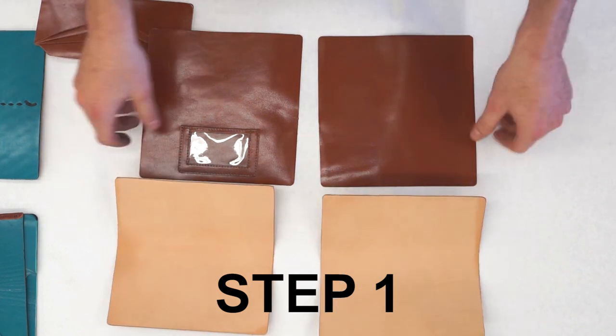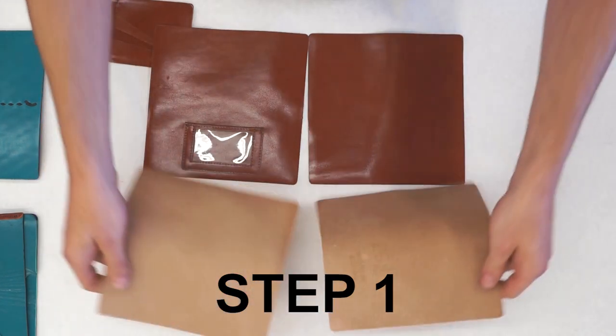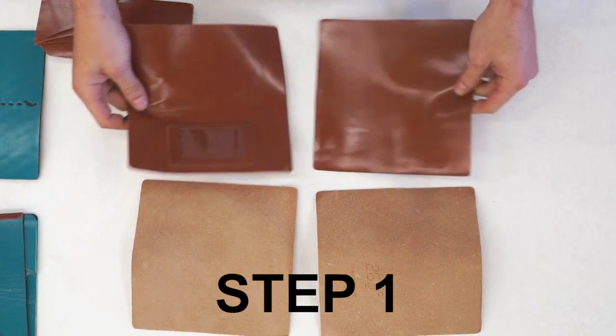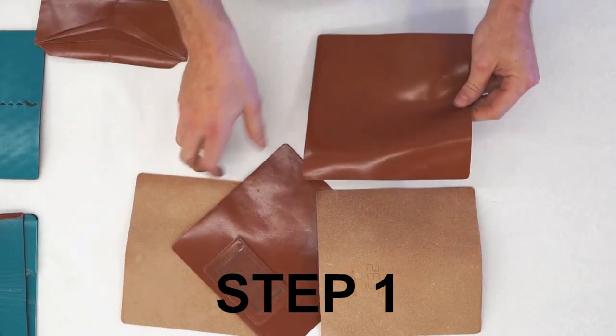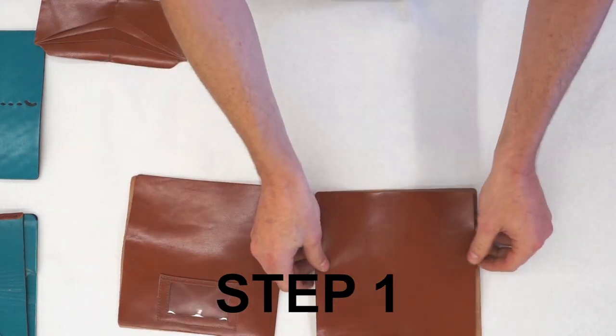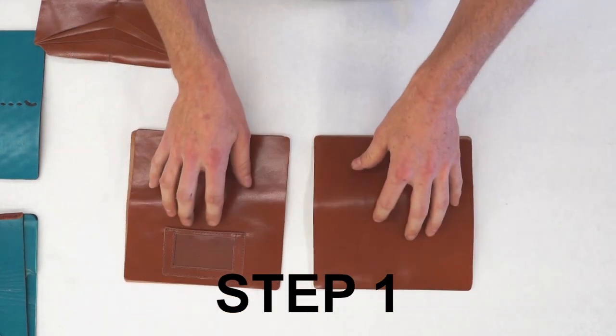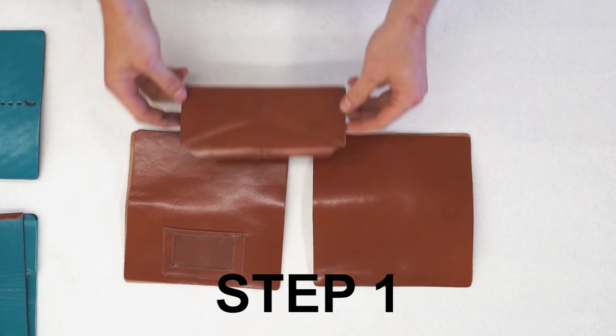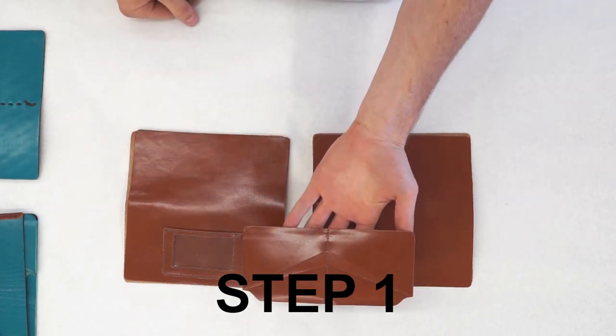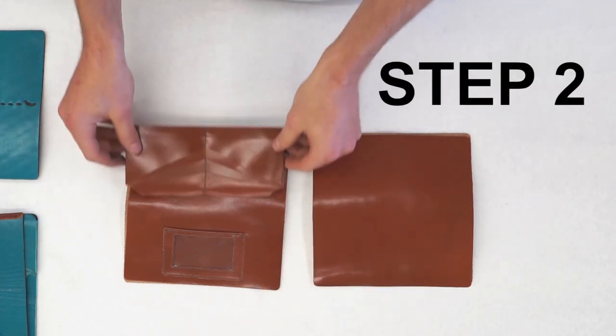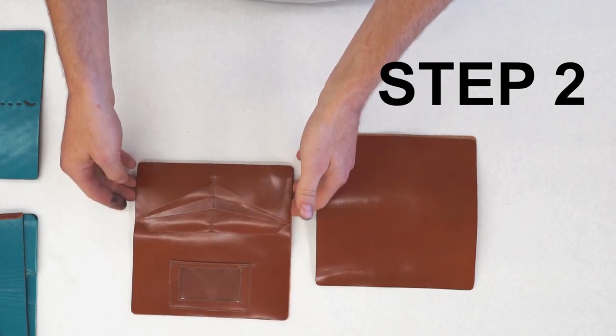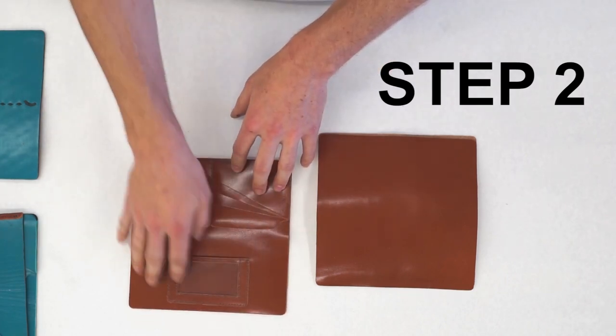Once you get them tooled and finished, you'll want to go ahead and glue on your kid skin liners, one onto each. Once you get that done, you can take your pocket assembly that you'll get in your kit, in the deluxe kit, and glue it onto the back with the ID window.